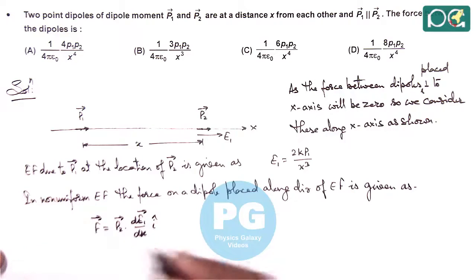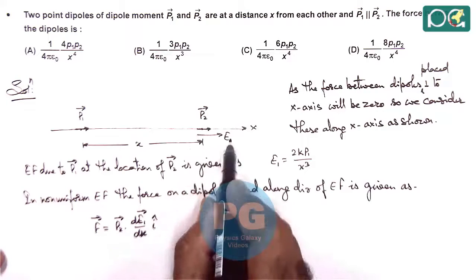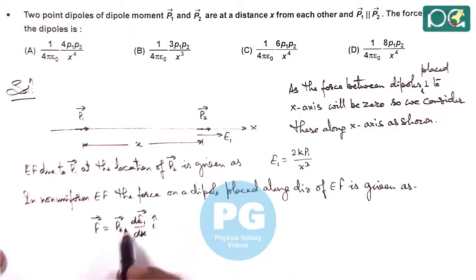If vectorially we wish to write it, but here p2 and E1 both vectors are in same direction, so the dot product will result in cosine zero. The magnitude of force will be p2 times d over dx of 2kp1 by x cube.